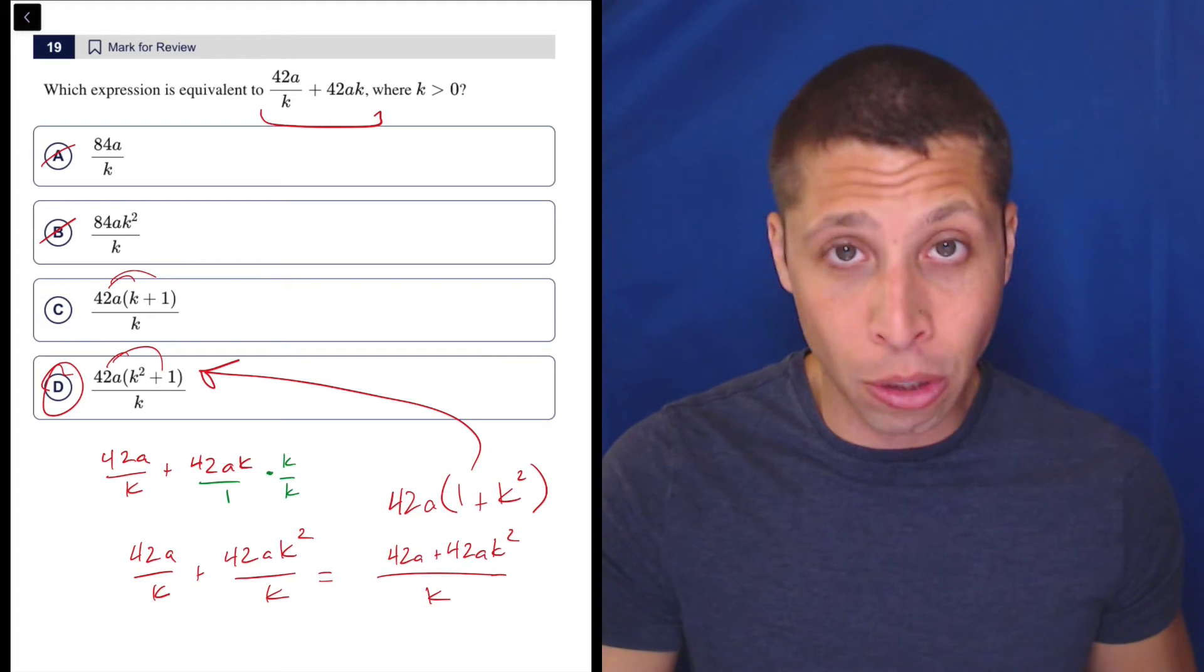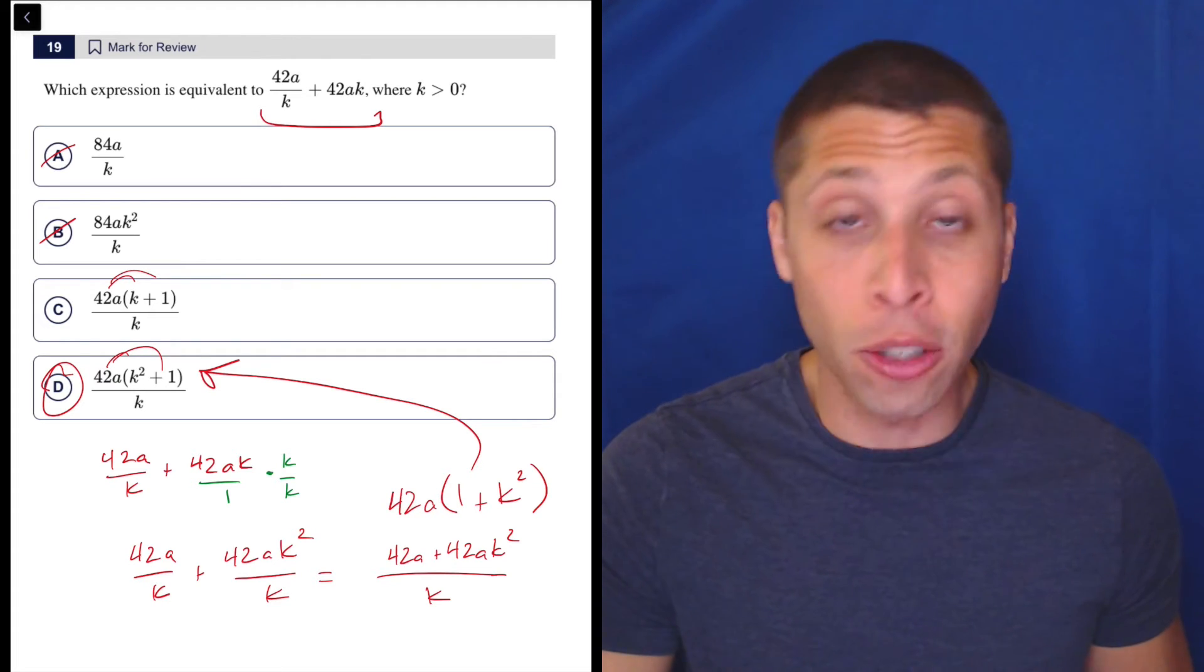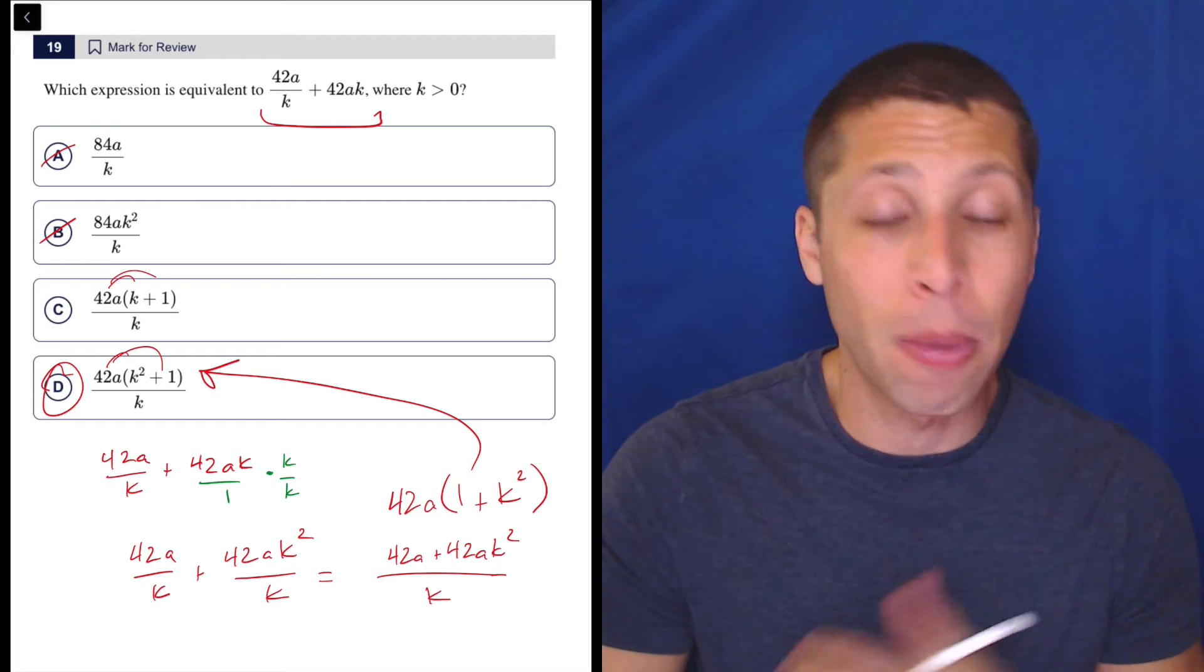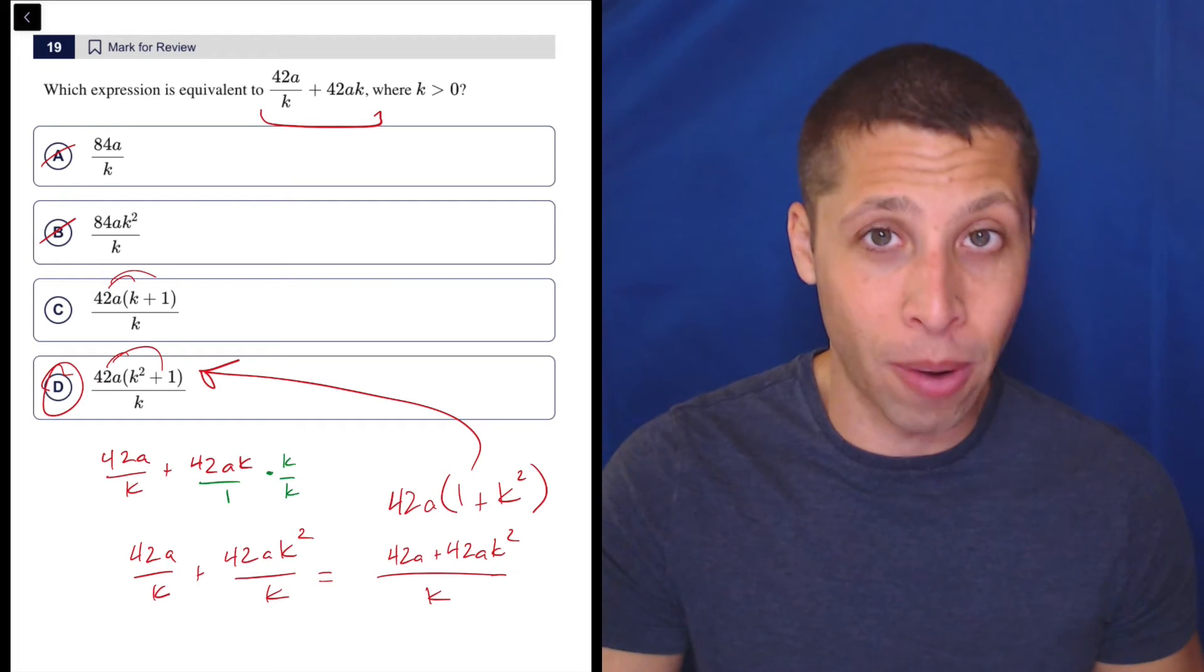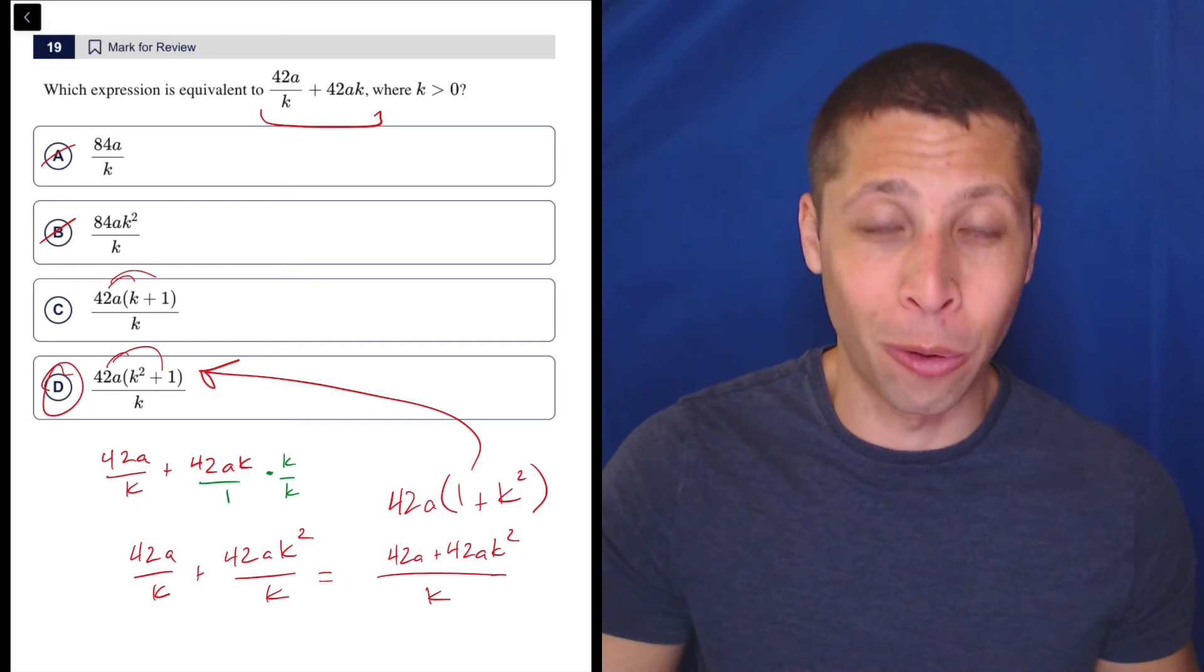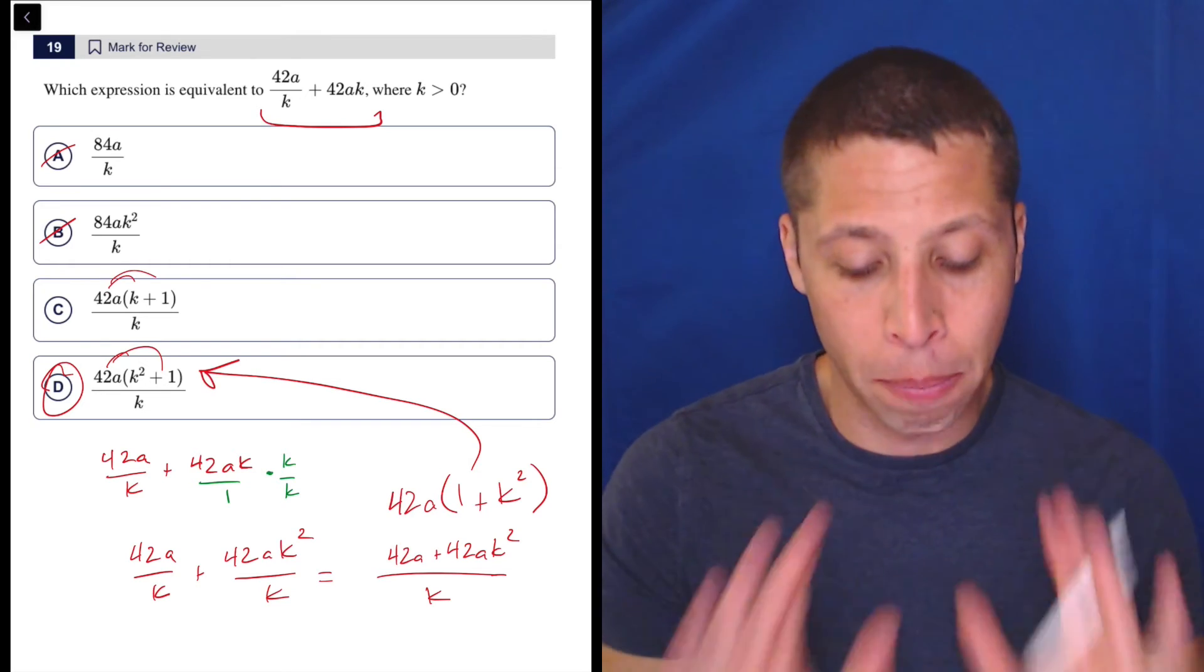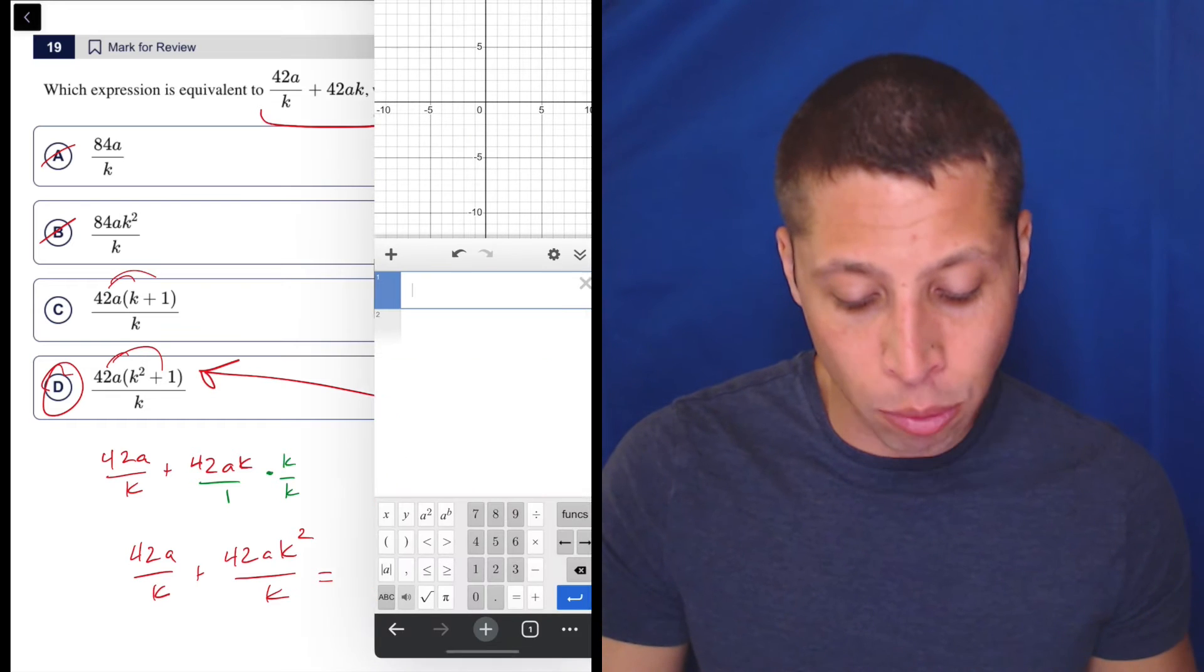We could arithmetize here as well. It's possible. I'm not going to do it because if we pick the simplest numbers like a and k both being one, it's not going to get us the right answer. It's going to get us a bunch of answers that could work, so we would have to choose new numbers, and so it gets time consuming. But Desmos lets us arithmetize really easily.